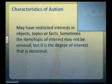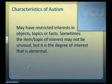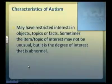A child might have restricted interest in objects, topics, or facts — and sometimes those interests themselves might not be unusual, but what's different is the degree of intensity, which is abnormal. For example, many kids are interested in Pokemon or video games, but what distinguishes the child on the autism spectrum is if they are only interested in talking extensively about a specific video game regardless of whether the listener is interested, and are incapable of communicating about other things — that is a manifestation of the restricted and repetitive behavior criteria.